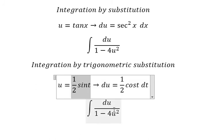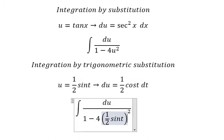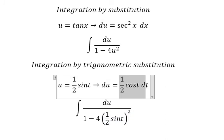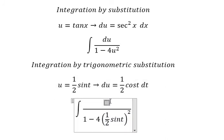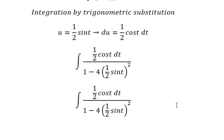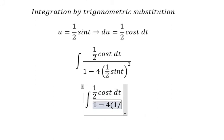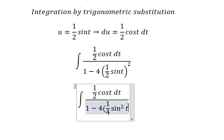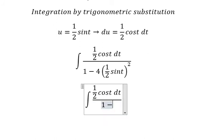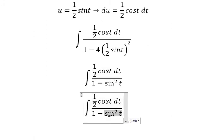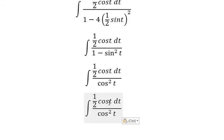This one you get 1/4 sin²t, the 4s cancel. So 1 minus sin²t equals cos²t. And now we can simplify cos t on numerator and denominator.